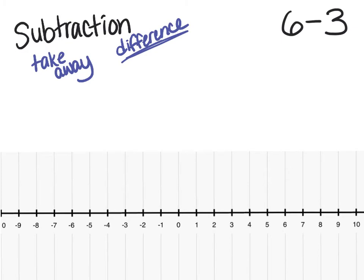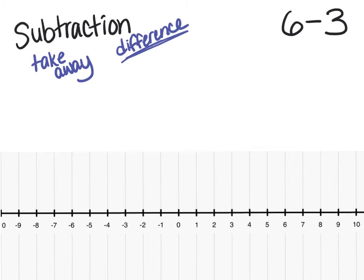With subtraction, order matters. Students need to understand that 6 minus 3 is a different problem from 3 minus 6. Usually when kids are young, we tell them the big number goes on top, but that's not necessarily always true. In reality, we should think about subtraction as the difference from the subtrahend to the minuend — from my second number to my first number. If we always think of it that way, it's going to apply all the way through when we use negative numbers.